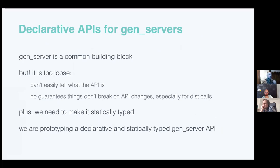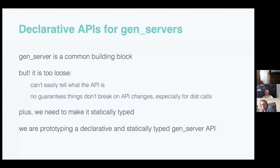Another great example at the intersection of static typing and robustness is GenServer, the most common building block for concurrent Erlang applications. It is a very powerful abstraction, but it has problems. To tell what the API is, you have to read the implementation, and there are no guarantees it won't change in a breaking manner, especially when calling GenServer from another machine. We are working on prototyping a declarative API for GenServer and hope to share more details later this year.